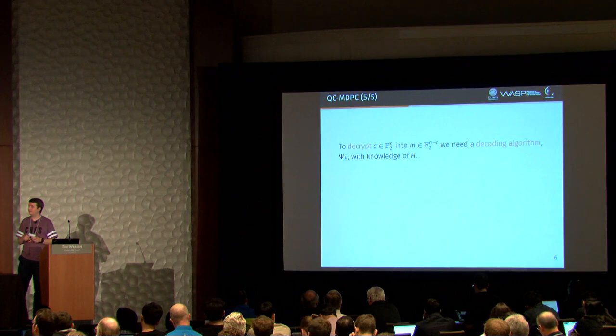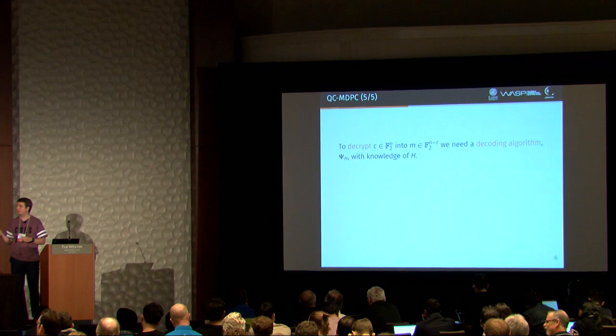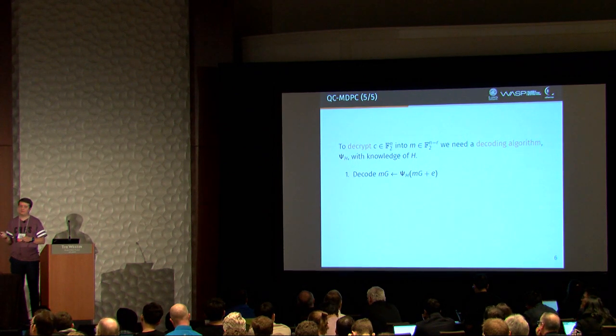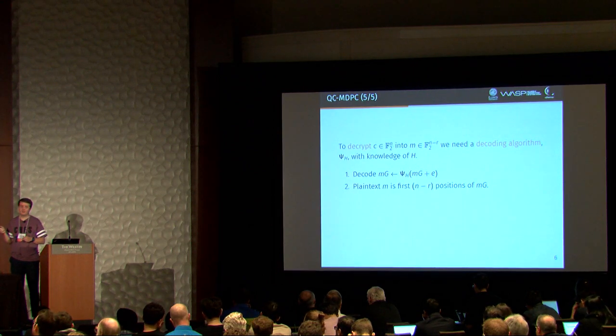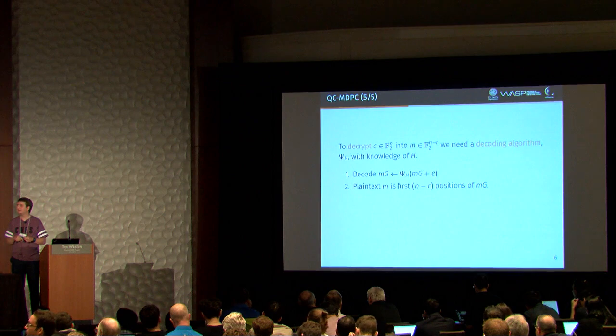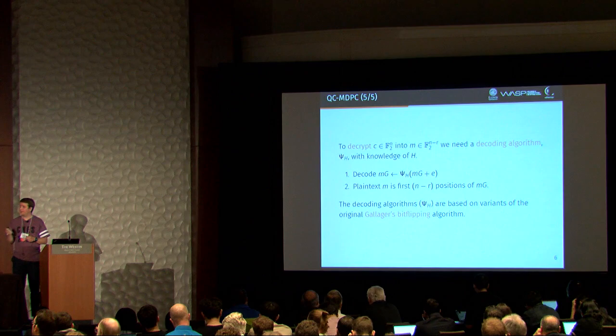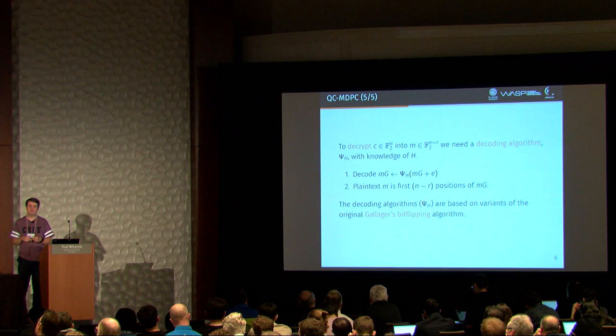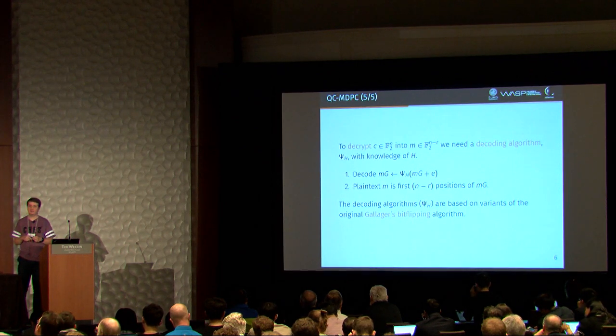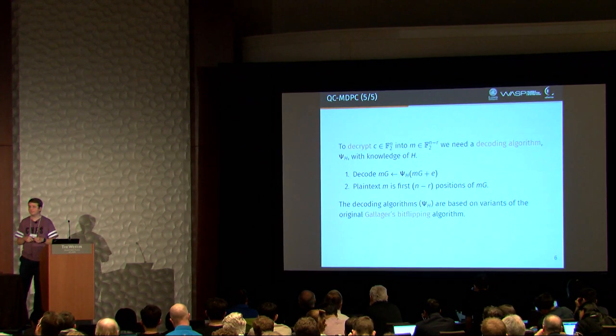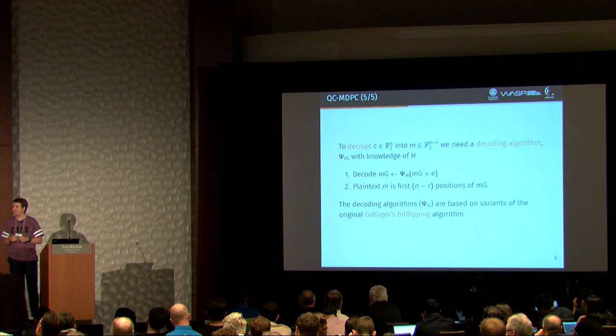To decrypt, we need a decoding algorithm. We call it psi h because it uses the knowledge of h in order to work. And we simply apply this to the ciphertext, remove the error vector, and then we have the plaintext as the first part of the ciphertext minus the error vector. And these decoding algorithms used by MDPC are based on the original Gallagher bitflipping algorithm, which is iterative. It's very efficient. But unless you take special care, it's not constant time.